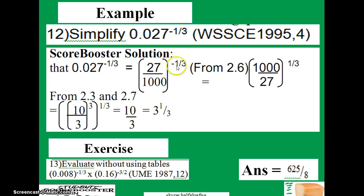The next thing you're going to do here is to convert the negative sign of the exponents into positive. From rule 2.6, you can do that by just taking this 1000, take it up and bring 27 down as we have here, and you can notice that the negative sign has disappeared.